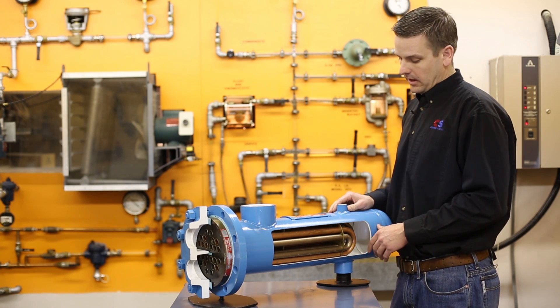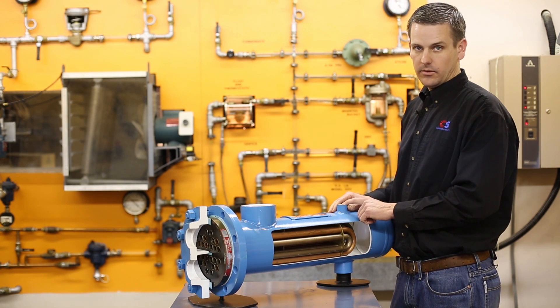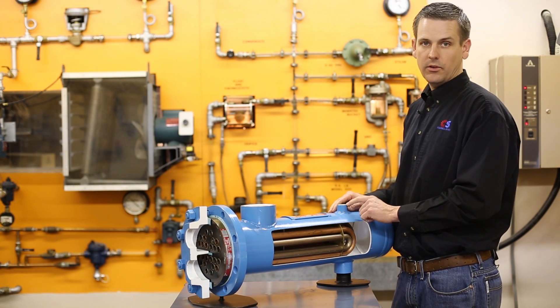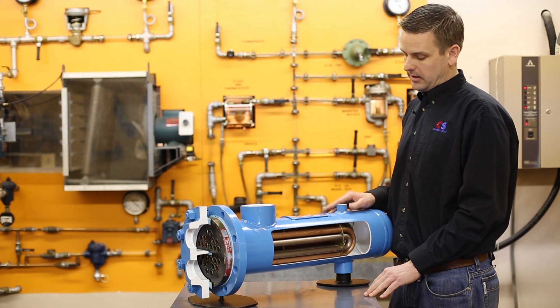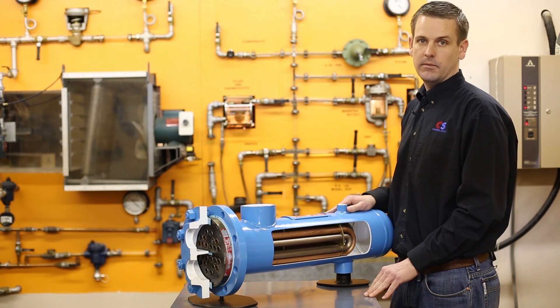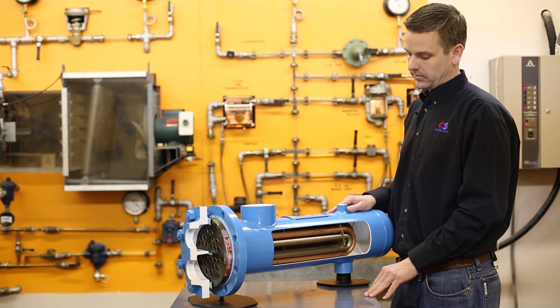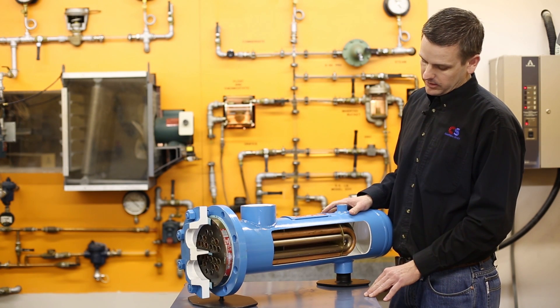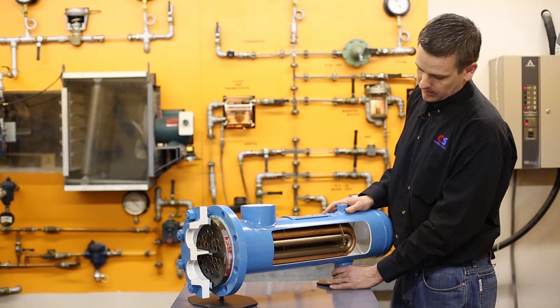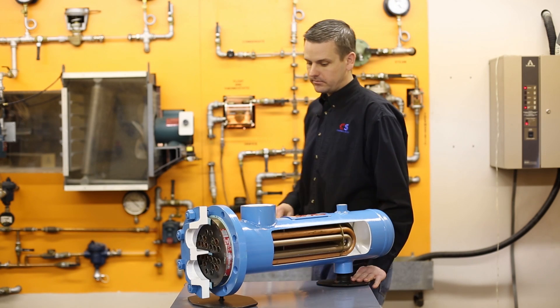Typically, this air vent we like to run to a drain or to a condensate line to keep that from dripping constantly. So that's the steam, the air vent, vacuum breaker, and the condensate side.